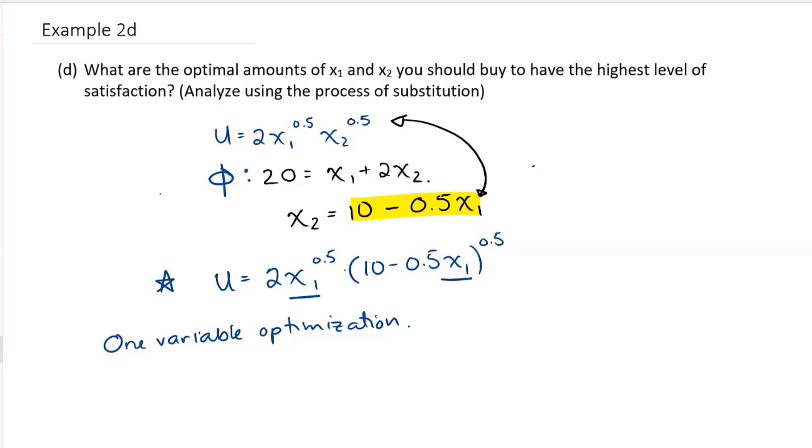So here I'm going to recognize that these have the same exponent and it's multiplication that's happening. So I'm going to combine those exponents. So this is the same as 2 times X1 times 10 minus 0.5 X1, all to the power of 0.5.